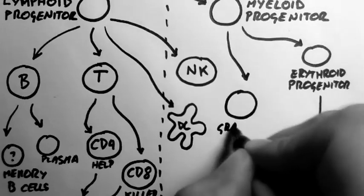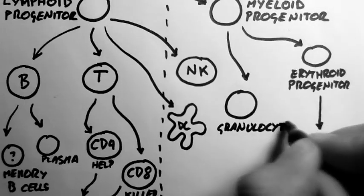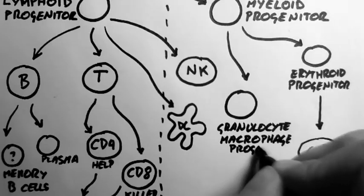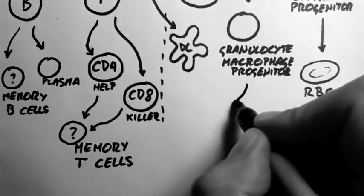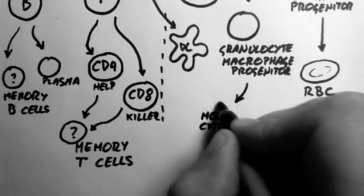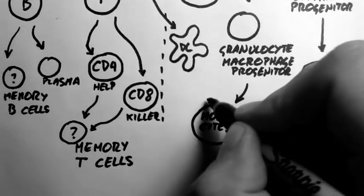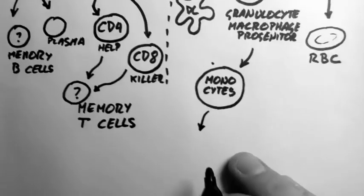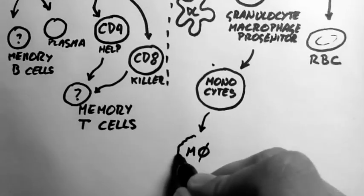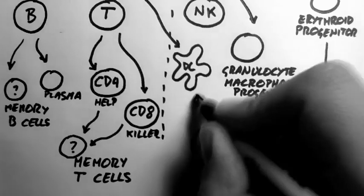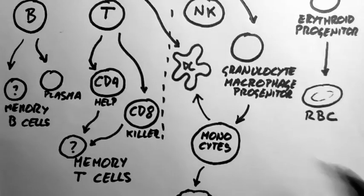The other thing that this can give rise to is the granulocyte macrophage progenitor. And this can become all sorts of cells. One of the most important types is the monocyte. These travel around in the blood until they're told to turn into macrophages. This M with a circle with a dash through it is the shorthand for macrophage. But they can also turn into these dendritic cells.